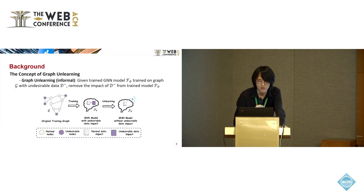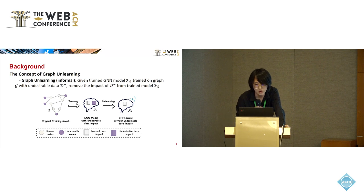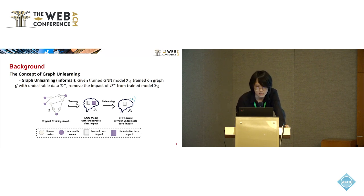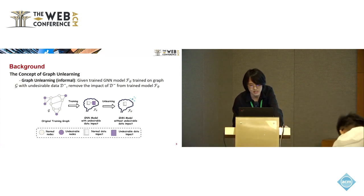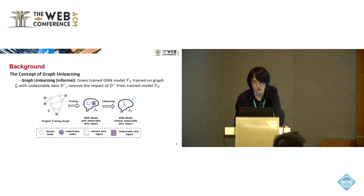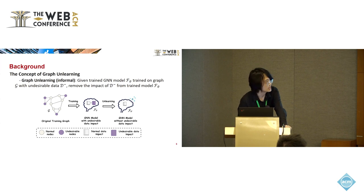Informally speaking, the concept of graph unlearning can be formalized as follows. Graph unlearning means that given a trained graph neural network model F parameterized by theta, trained on graph G with some undesirable data points, our goal is to remove the impact of these data points from the trained model, and in the end gain a clean model, which is represented by F theta prime.